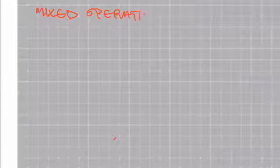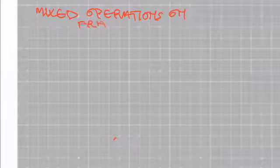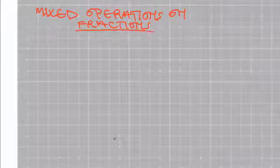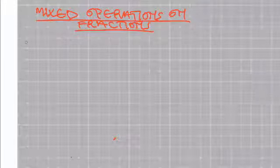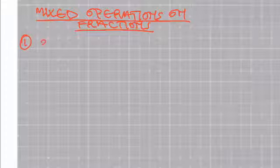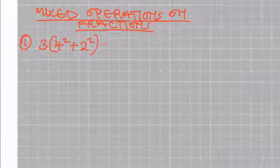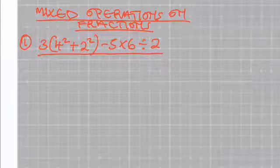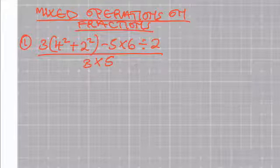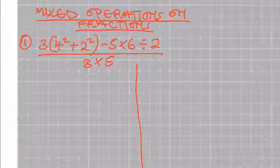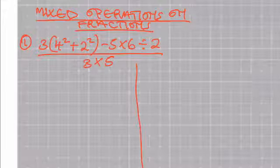Welcome. In this lesson we are going to look at mixed operations on fractions. I want to pick on a question that was tested in KCPE 2010: 3 into the square of 4 plus the square of 2 minus 5 multiplied by 6 divided by 2, everything over 3 multiplied by 5. Because this question involves many operations, you work with the rule of BODMAS.